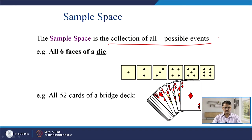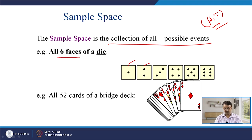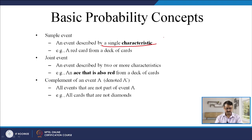There is something called sample space — the collection of all possible events. If you toss a fair coin you get heads and tails — that is your sample space. A die has 6 faces — 1, 2, 3, 4, 5, 6 — as its sample space. A deck of cards has 52 possible events as its sample space. A simple event is an event described by a single characteristic, such as drawing a red card from a deck of cards, or getting heads when you toss a fair coin.